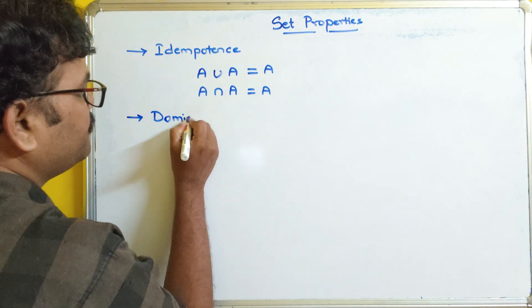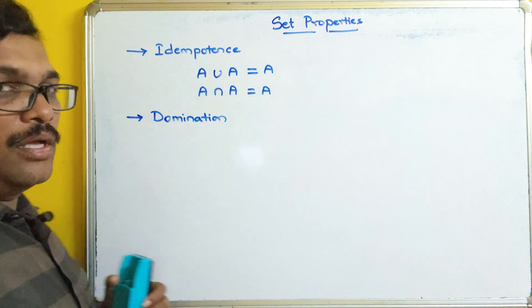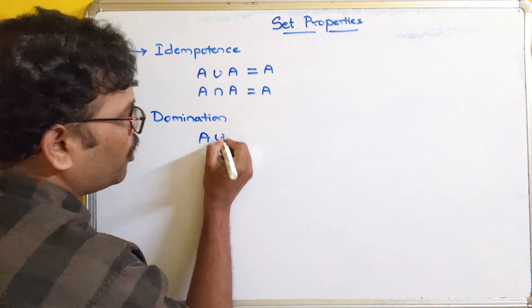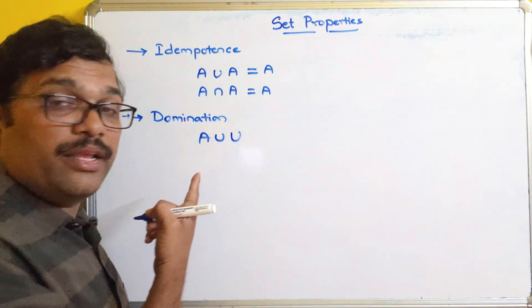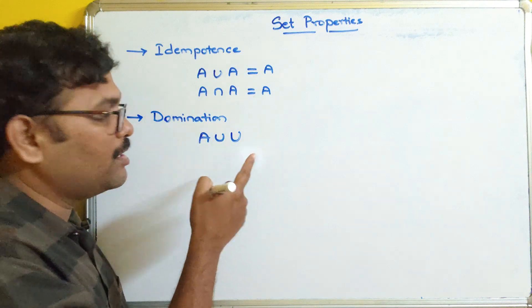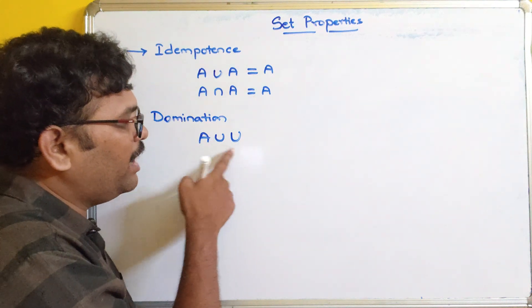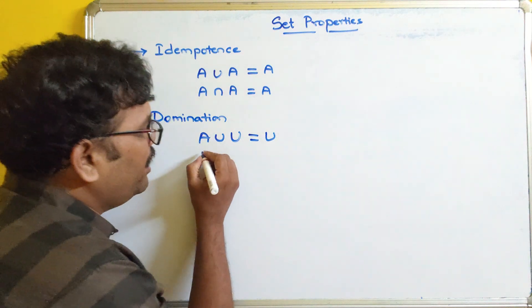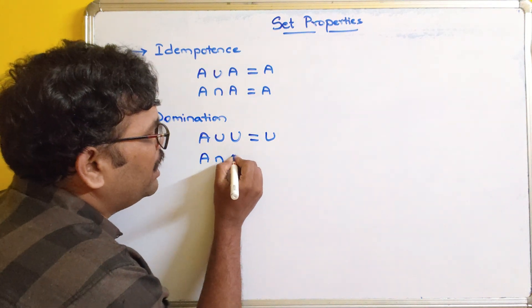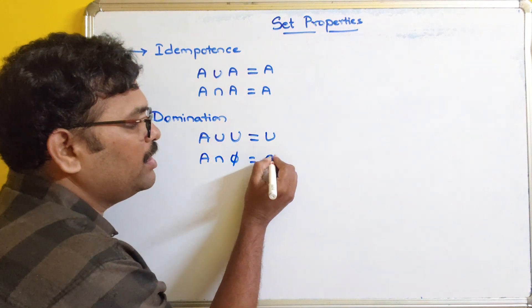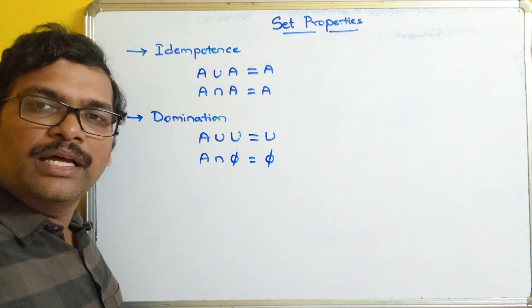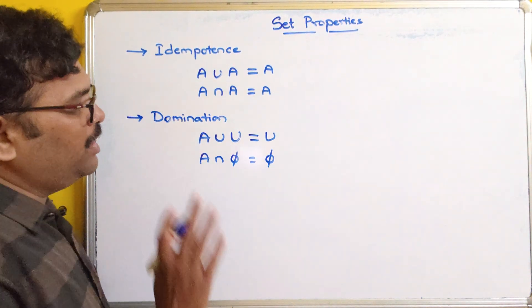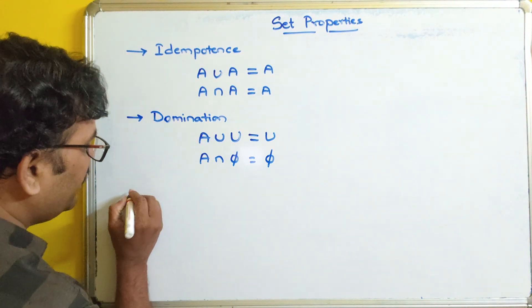The next property is domination. If you perform the union operation between A and U, where A is a set and U is the universal set, you will get the universal set as a result. And if you perform A intersection null set, there will be no common elements, so the result will also be the null set. That is the domination property.